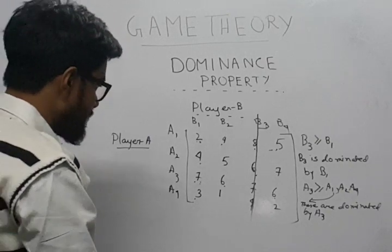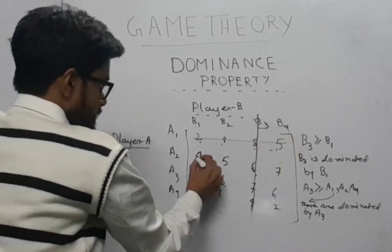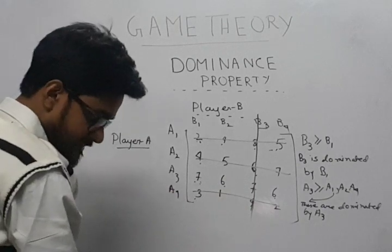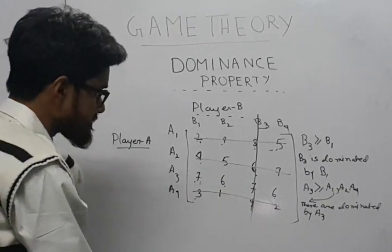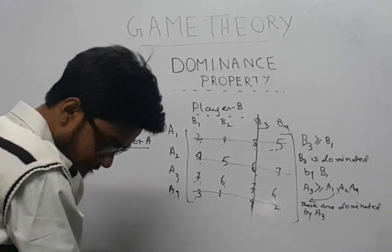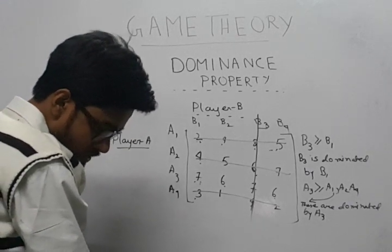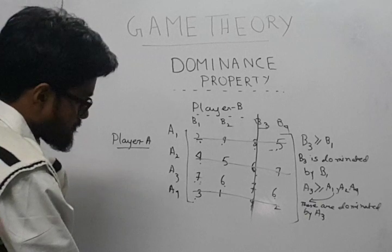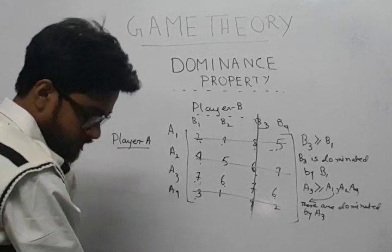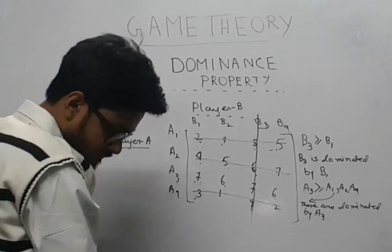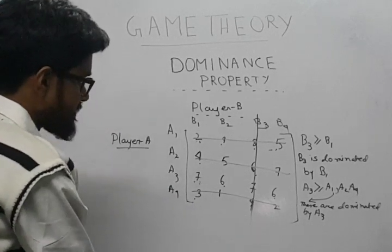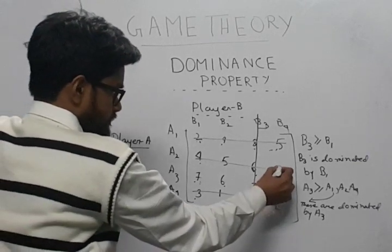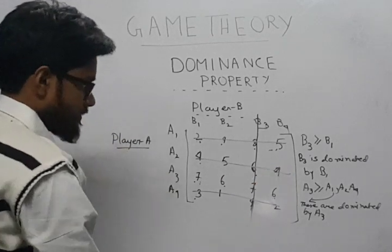Now similarly, we will cancel out these rows. So we are simply left with this row, that is 7, 6, 6.